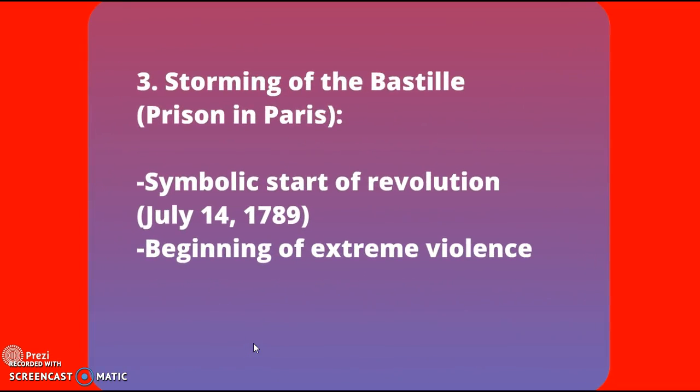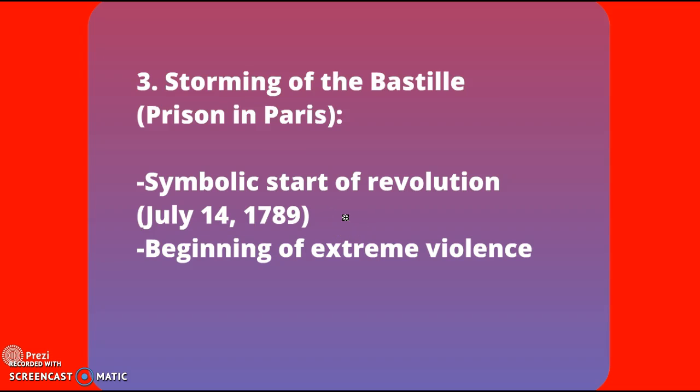That is going to actually inspire the start of the revolution. The actual start of the revolution — where there is shooting and we see the National Assembly start to take over — is called the Storming of the Bastille. There is a prison in Paris called the Bastille, and these revolutionaries are going to storm it. Their goal is to free political prisoners. But the important thing is it becomes extremely violent, and this is going to be the hallmark of the revolution. This is considered their independence day: July 14th, 1789 — the start of the actual revolution.